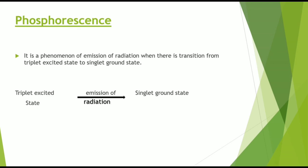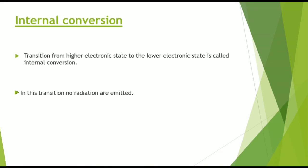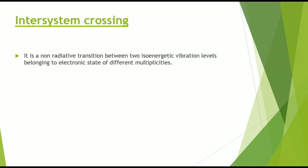Now let's see what is internal conversion. Next is phosphorescence — it is a phenomenon of emission of radiation when there is a transition from the triplet excited state to the singlet ground state. When this transition occurs, there is again emission of radiation. Transitions from a higher electronic state to a lower electronic state is called internal conversion. In this transition, no radiations are emitted. Next, inter-system crossing is a non-radiative transition between two iso-energetic vibrational levels belonging to electronic states of different multiplicities.